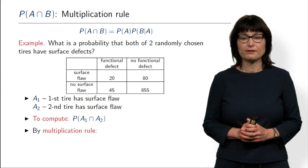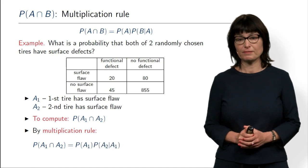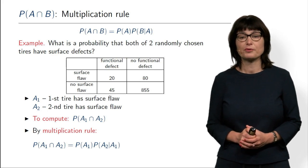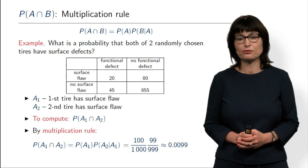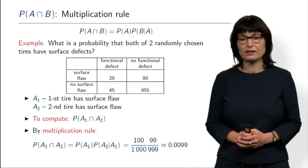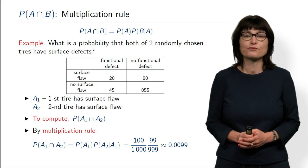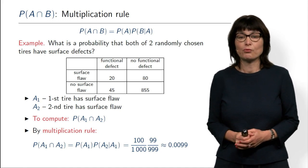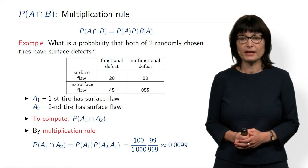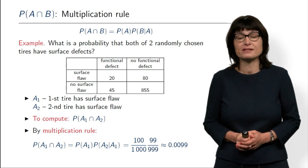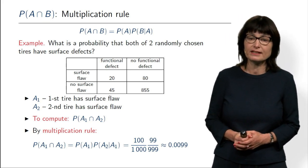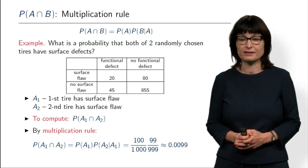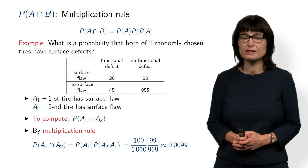We write the probability of intersection and apply the rule: it is the probability of A1 times the probability of A2 given A1. What is the probability of A1? Out of 1000 tires, 100 have a surface flaw, so P(A1) = 100/1000. But then one tire with surface flaw is already gone. So we have 99 left out of 999 tires. The conditional probability of the second tire having a surface flaw given the first one does is 99/999 — not exactly one percent, but a little bit less.